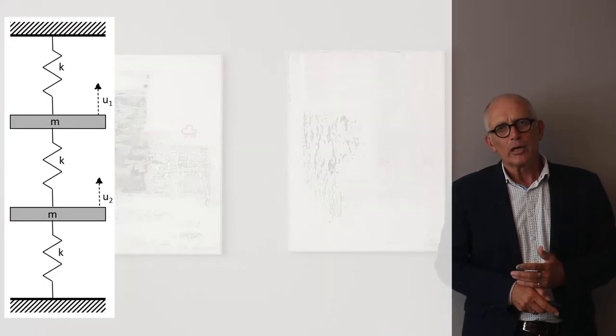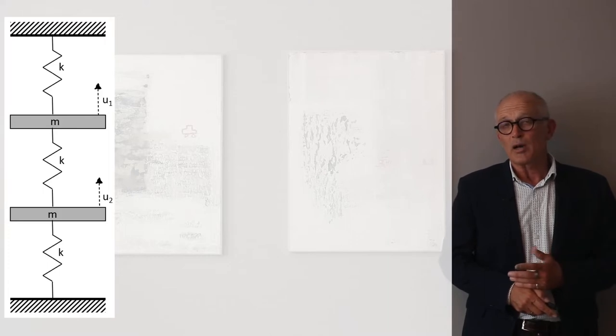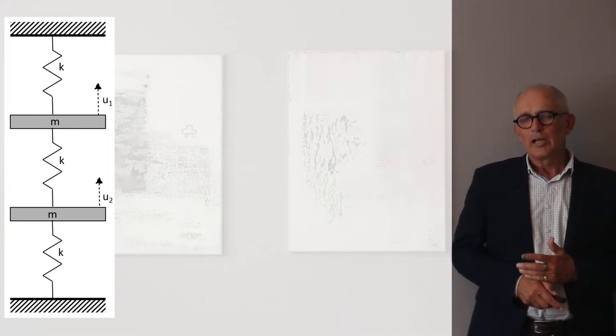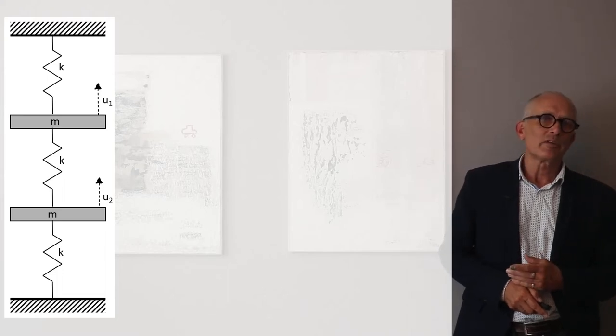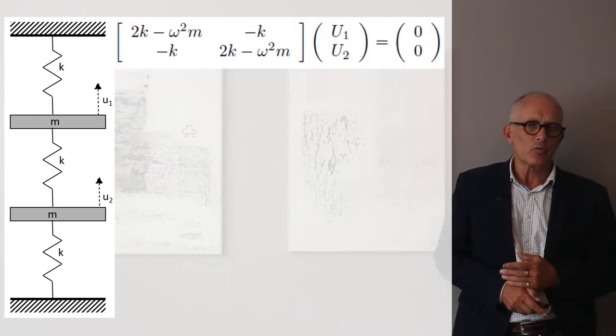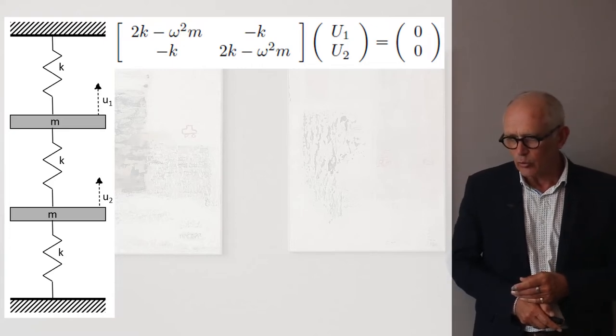If the stiffness of the three springs is the same, and if the two masses are identical, then the system is much simpler and we have an impedance matrix that is 2k minus omega square m on the diagonal and minus k for the off-diagonal terms.